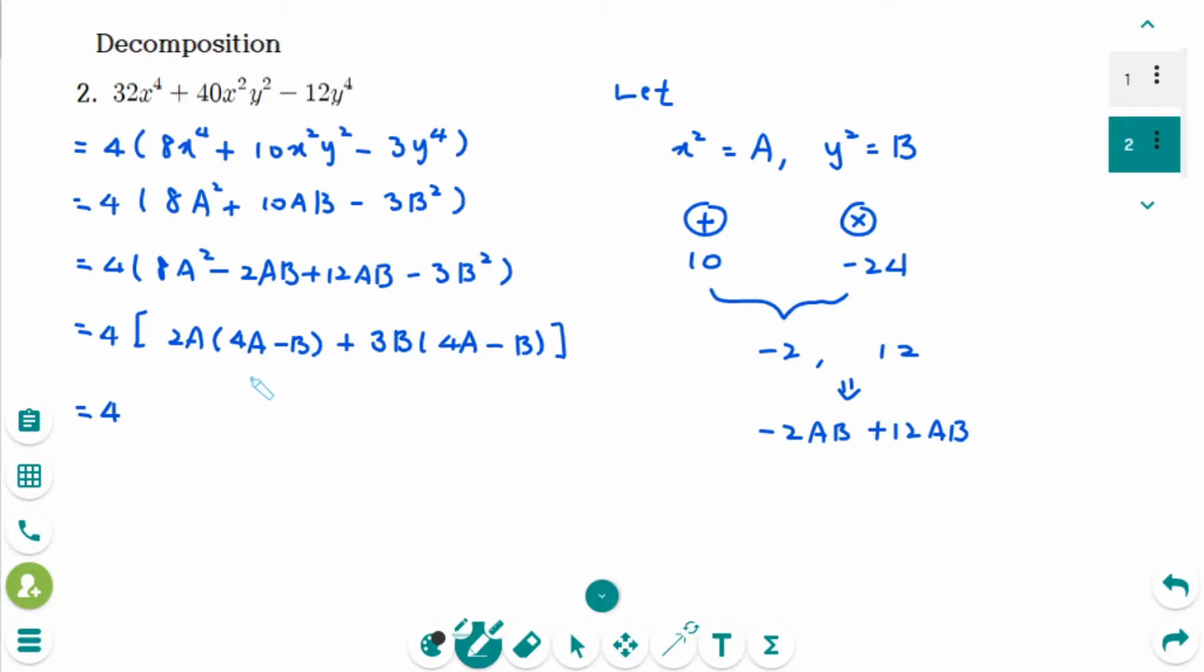Then 4A minus B is a common factor. So take out 4A minus B. And inside is 2A plus 3B. And then go back to original.